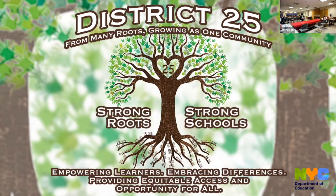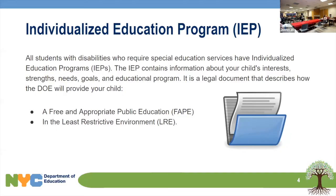For some students, that's going to require having an individualized education program — an IEP — to be able to access the curriculum with individualized support. An IEP is a legal document that stands for an individualized education program. All students with disabilities who require special education services have an IEP. The IEP contains information about your child's interests, strengths, needs, goals, and the educational program being recommended. It describes how the department of education will provide your child a free and appropriate public education in the least restrictive environment.